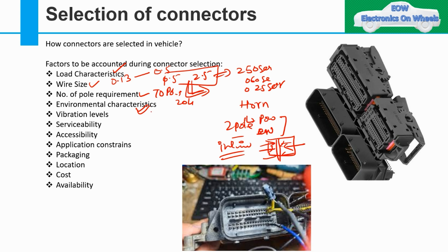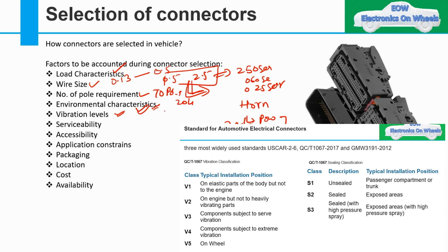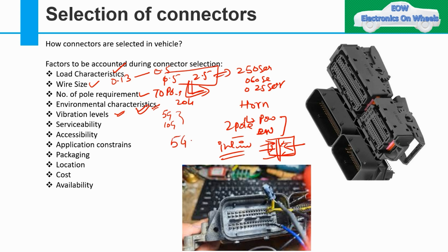Environmental characteristics must also be considered — whether it is a waterproof or non-waterproof zone. Then vibration level: there are three vibration levels, S1, S2, S3, and you also check whether it is 5g or 10g. If a connector is selected for 5g vibration but the real vehicle vibration at that location is 10g, the connector will not withstand it and may dislocate from its position after six months or a year, creating a problem for that function.